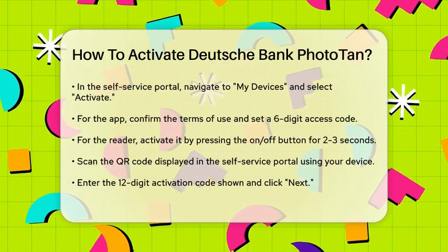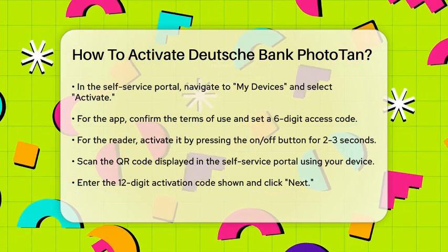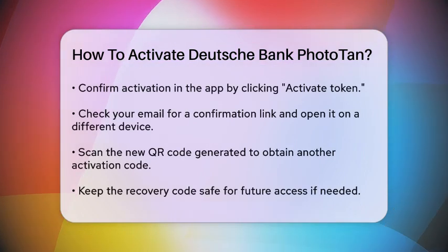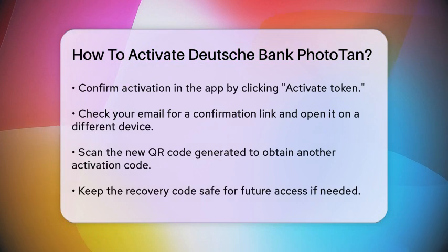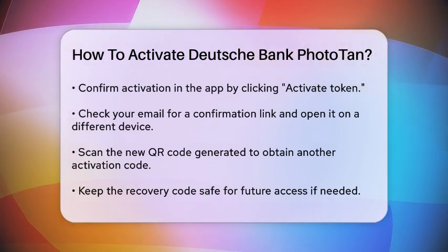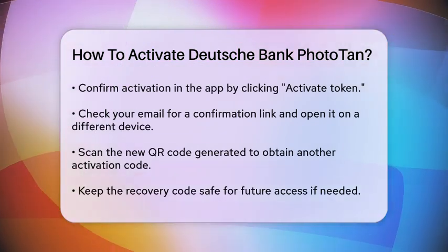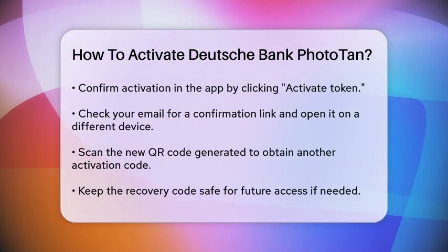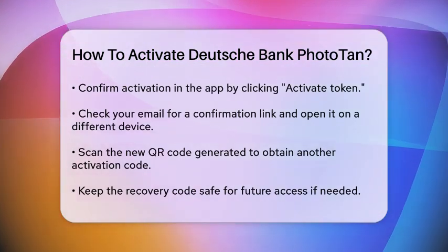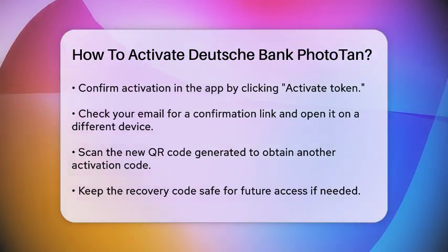You will receive a confirmation email with a link. Open this email on a different device and click the Continue link. This will generate another QR code, which you need to scan to get another activation code. Enter this code in the self-service portal.